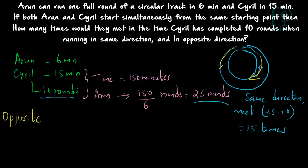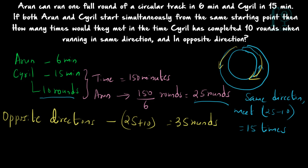In the opposite direction, for every round each one is running — Arun running one way and Cyril running the other — they will be meeting each other. So you have to take the sum: 25 plus 10 equals 35. The total rounds run by the two persons is 35, so they will be meeting 35 times when running in the opposite direction.